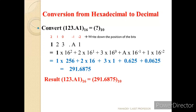Another example with a fractional number: convert 123.A1 base 16 to decimal. Before the decimal point positions are 0, 1, 2; after are −1, −2. So: 1×16² + 2×16¹ + 3×16⁰ + A×16⁻¹ + 1×16⁻². A is 10, so: 256 + 32 + 3 + 0.625 + 0.0625 = 291.6875. So hexadecimal 123.A1 base 16 equals 291.6875 in decimal.